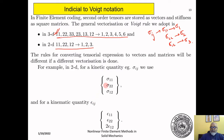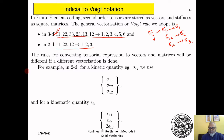Similarly, the strains are epsilon_11, epsilon_22, and 2*epsilon_12, and they map to the first, second, and third entries in the array respectively, according to this mapping. For three dimensions, we will handle the six components of stress and the six components of strain in the same way.